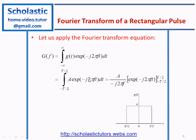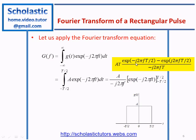We perform the integration: A is a constant, and integrating exponential of j·theta gives exponential of that term divided by the exponent. In this case the exponent is minus j 2π f. Substituting the limits from minus T/2 to plus T/2, we get exponential minus j 2π f·(T/2) minus exponential positive j 2π f·(T/2), all divided by minus j 2π f. We then multiply and divide by capital T to arrange this in terms of a sine function.